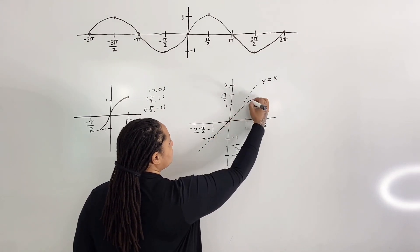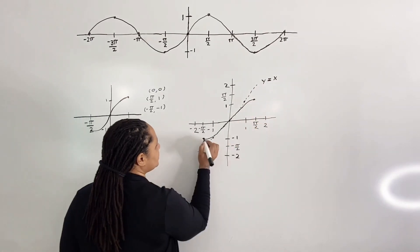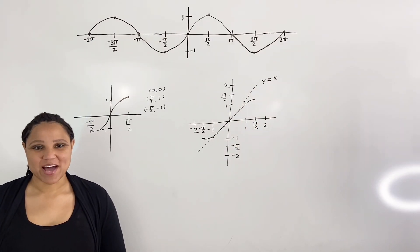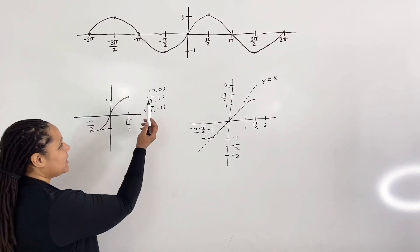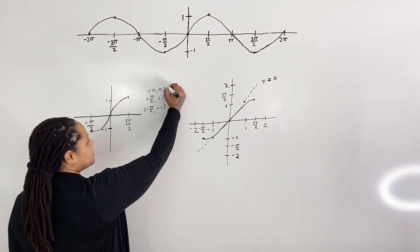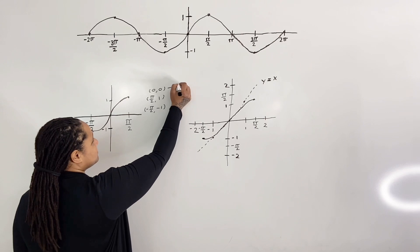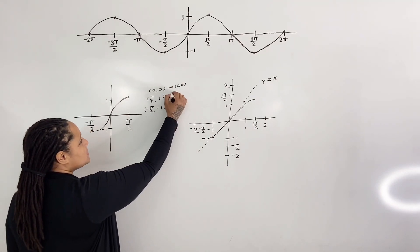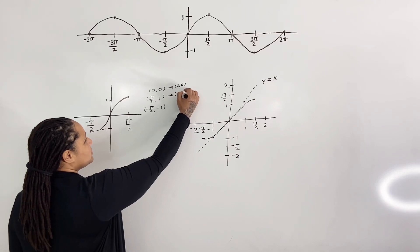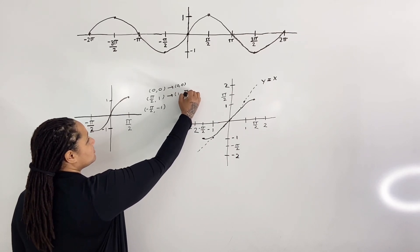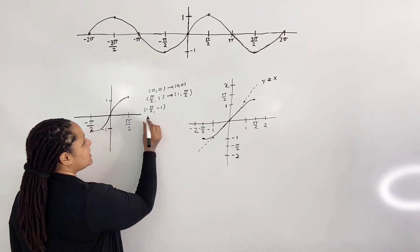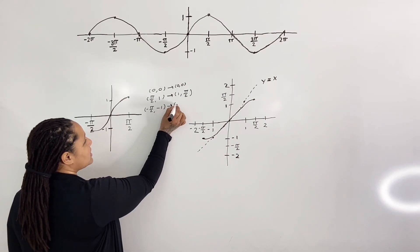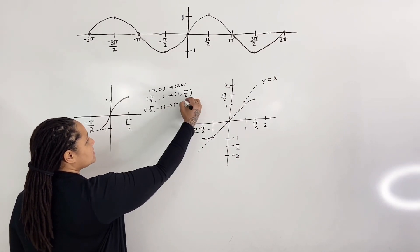Step four: swap the x and y values. The point (0, 0) stays the same. The point (pi over two, 1) becomes (1, pi over two). The point (negative pi over two, negative 1) becomes (negative 1, negative pi over two).